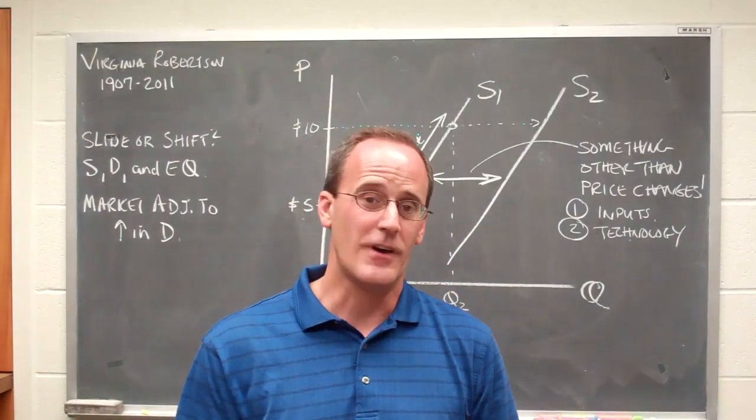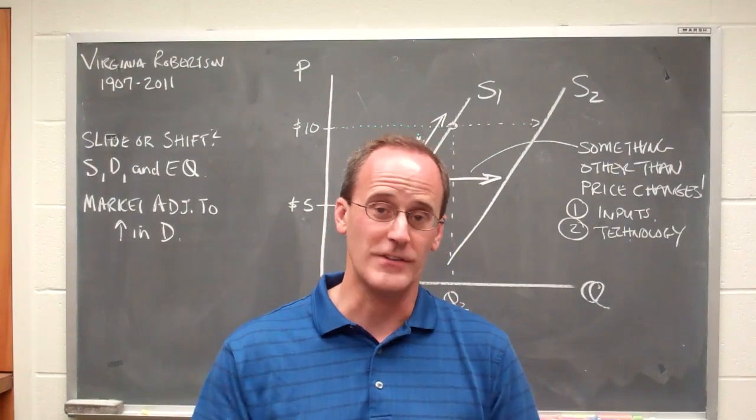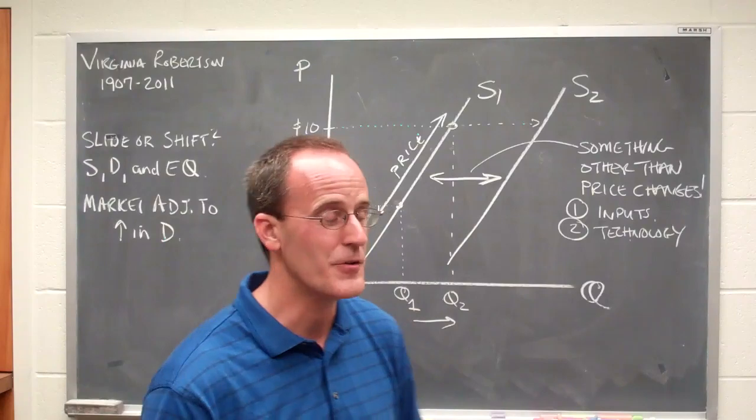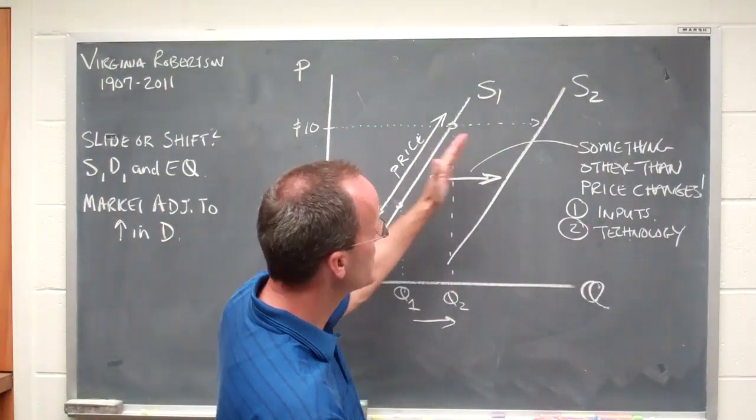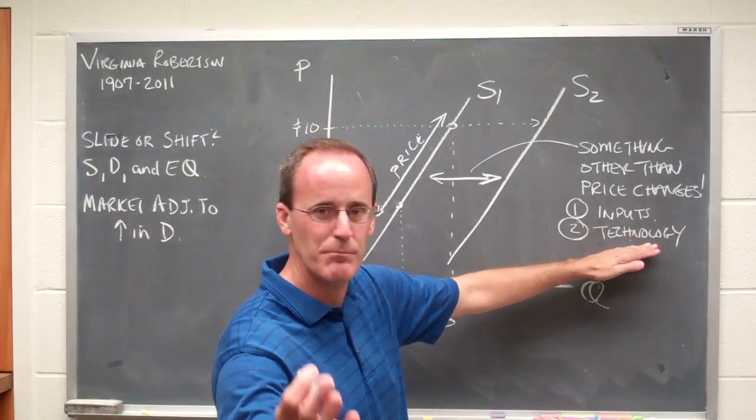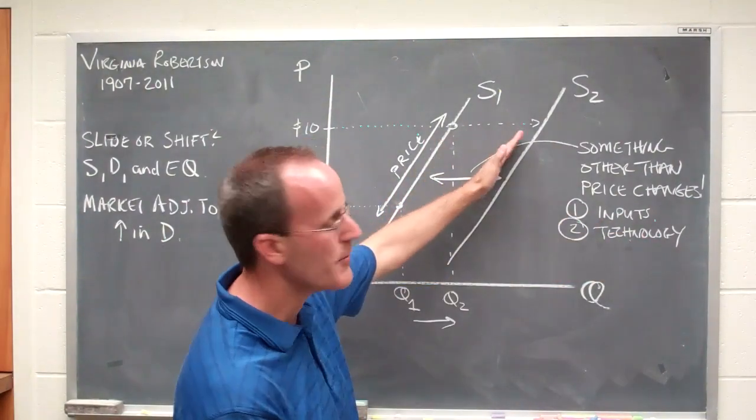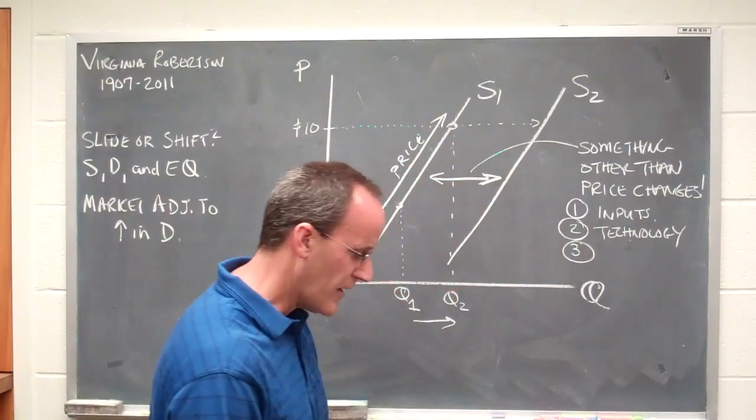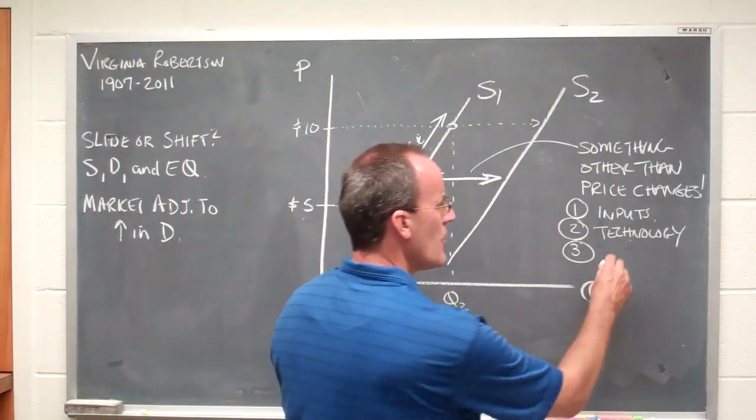Either produce a higher quality good, which is going to be more successful, or produce the same good at a lower cost. Either way, it's very good for your business, right? So technology shifts the curve out. We don't worry about losing technology. No business would adopt bad technology. They're only going to adopt better technology. Point number three for us to think about here. Kind of a broad category.